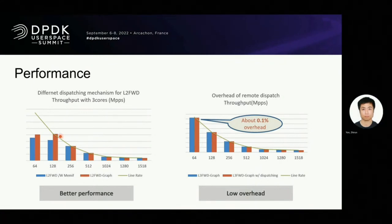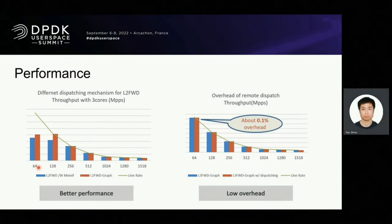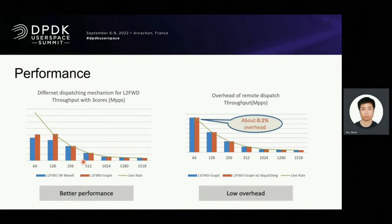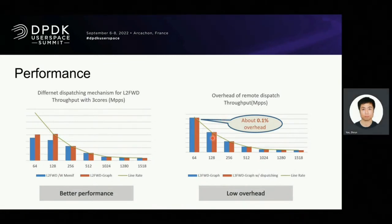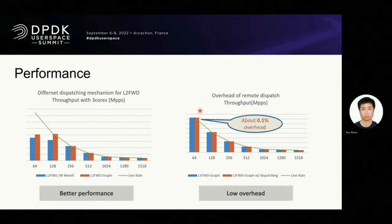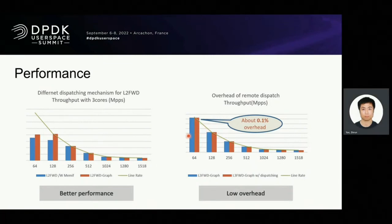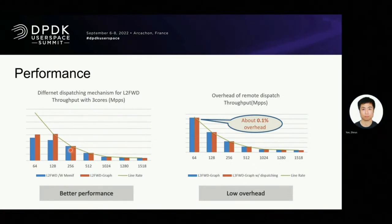In the left chart, the blue is layer 2 forward with memif, and the red is layer 2 forward graph with our remote work queue dispatch mechanism. We find that our remote dispatch approach could have better performance than memif. The right chart shows that there is a very low overhead when we introduce remote work queue — it's very small. For our use case, the most overhead comes from I/O, so we notice that the data reaches line rate in the second and third column quickly. It would be more obvious if we use a complex workload, which will be our next steps.